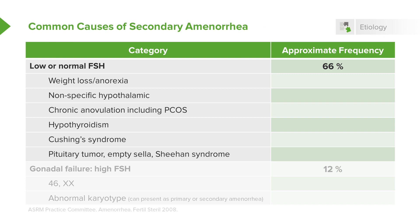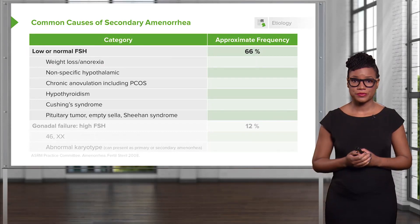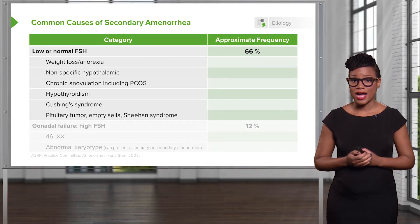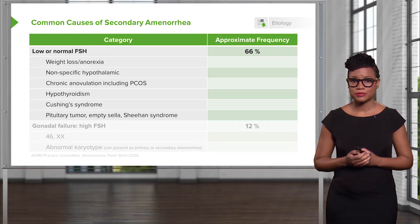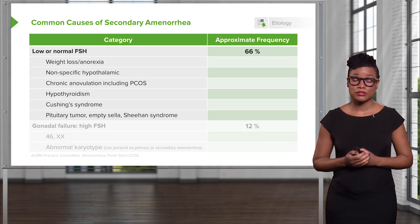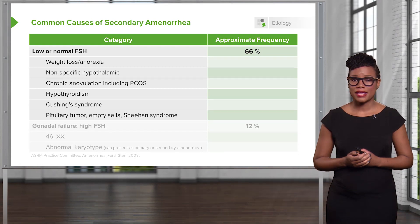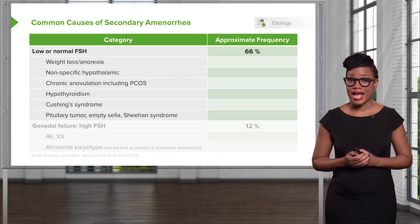Let's talk about Sheehan syndrome, which is often tested on the USMLE. It usually occurs after a postpartum hemorrhage — postpartum hemorrhage remains the number one cause of maternal death worldwide. With Sheehan syndrome, you get pituitary apoplexy because the pituitary loses blood flow during the hemorrhage. These women typically cannot lactate postpartum, they lose their axillary hair, and they never have a return to menses. Watch out for this on your exam.